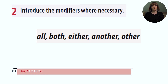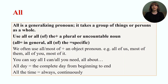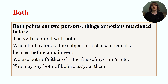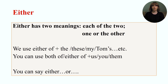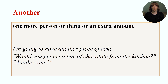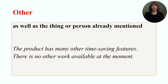In the next exercise, we will revise the usage of modifiers. 'All' is a generalizing pronoun — it takes a group of things or persons as a whole. 'Both' points out two persons, things, or notions mentioned before. 'Either' has two meanings: each of the two, and one or the other. 'Another' is one more person or thing or an extra amount. 'Other' refers to one more of the same thing or person already mentioned.